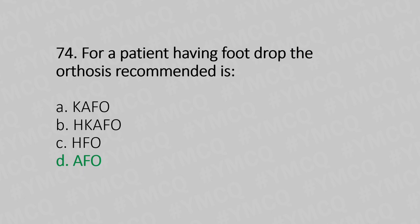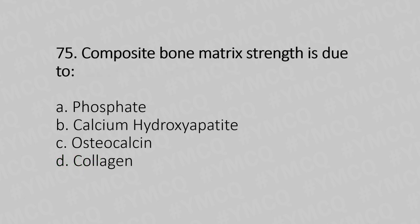Question 75: Composite bone matrix strength is due to — Option A: phosphate, Option B: calcium hydroxyapatite, Option C: osteocalcin, Option D: collagen. The answer is Option B, calcium hydroxyapatite.